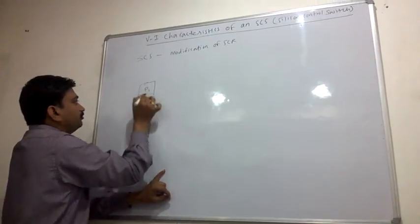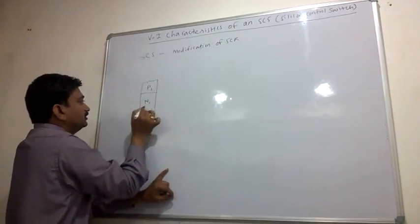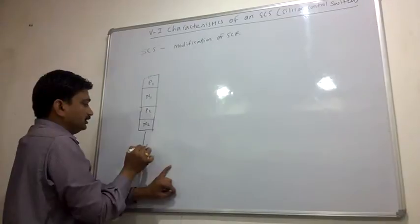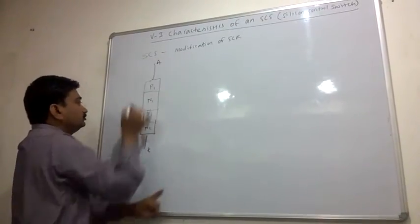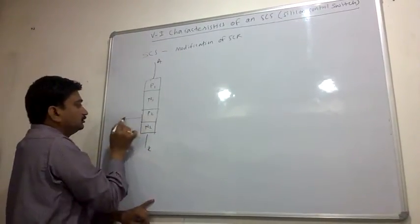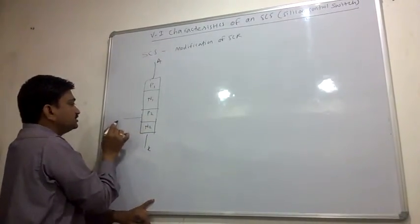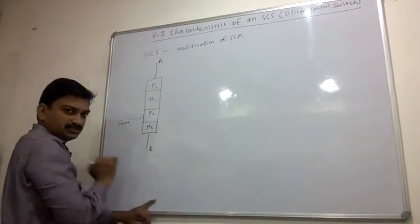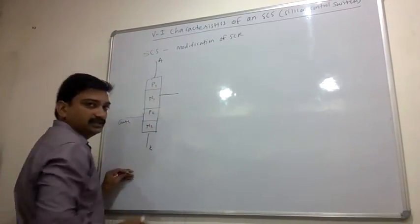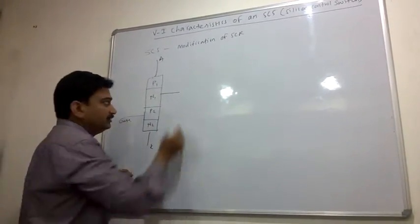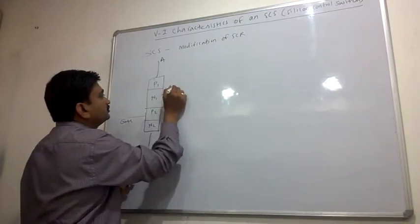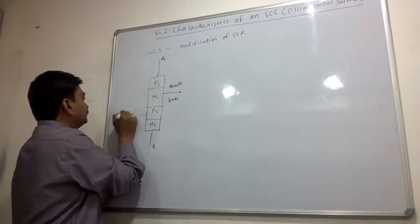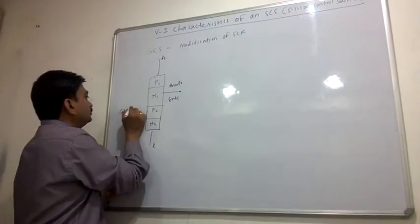The SCS has four layers: P1, N1, P2, and N2, along with a cathode and anode. This is the construction of SCR as a base. To form SCS, we add another gate terminal — this becomes the anode gate — and this other terminal is the cathode gate.